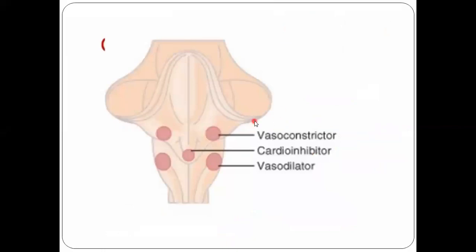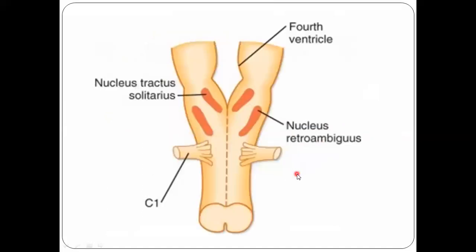We have the vagal centers: the vasodilator center, cardio-inhibitor center, and vasoconstrictor center. We also have the nucleus tractus solitarius, which is present in the brainstem, located laterally and inferiorly to the fourth ventricle.